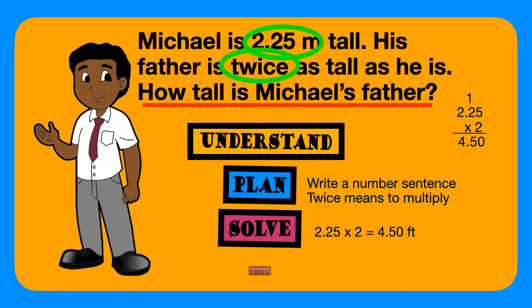Before we go, we must check. When checking, we use the opposite or inverse operation. The opposite of multiplication is division. If we divide 4 and 50 hundredths by 2, we will get 2 and 25 hundredths.